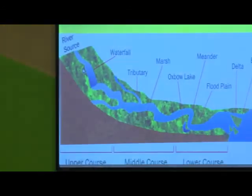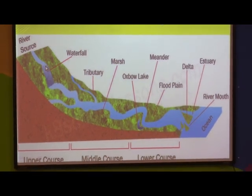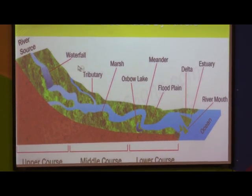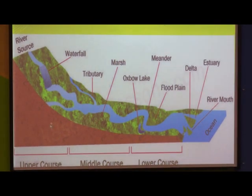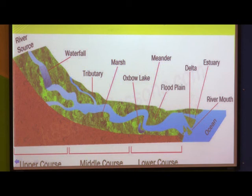Now let us see some features made by rivers. In the upland area, most rivers originate at the top of mountain areas. When the river flows from the source, it has the upper course, middle course, and lower course. In the upper course, the water speed is very high and waterfalls and gorges are formed in that area.